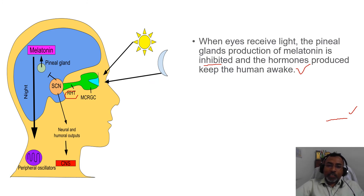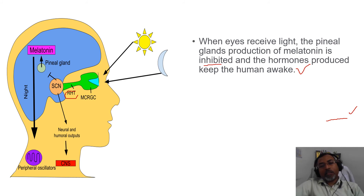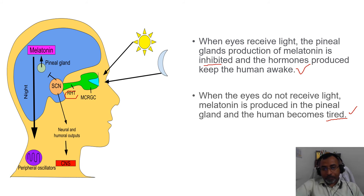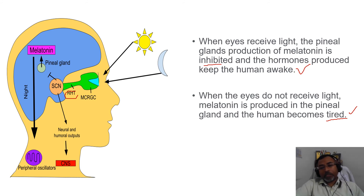Melatonin is only secreted whenever there is inhibition of the light signal. When the eye receives light, the pineal gland's production of melatonin is inhibited, and other hormones keep the human awake. When the eyes do not receive light, melatonin is produced in the pineal gland, and the human becomes tired.